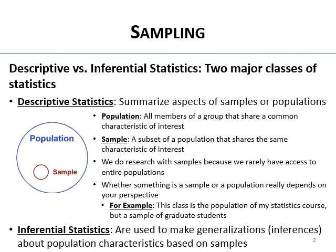Inferential statistics — the other major class — are used to make generalizations or inferences about a population from a sample. You calculate sample statistics to try to make a guess about what's going on in the population.